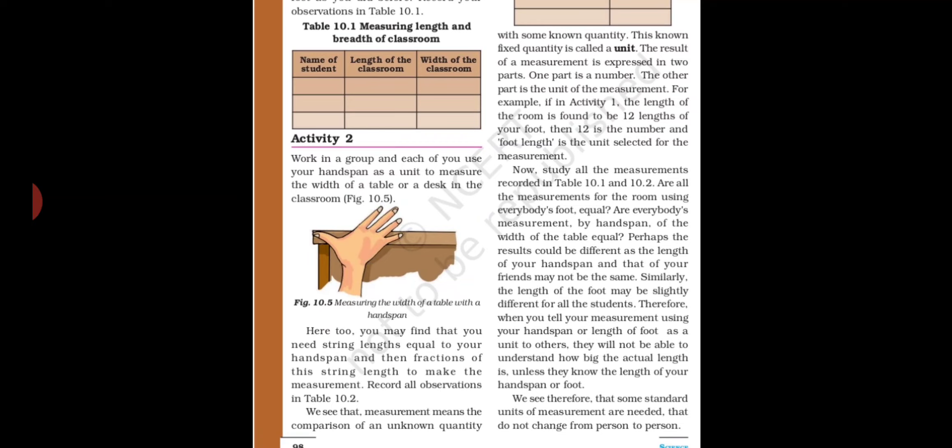For example, if you have drawn a line, its length is the unknown quantity because you don't know it yet. The known quantity is the measuring tape, string, or scale that you use to measure it.